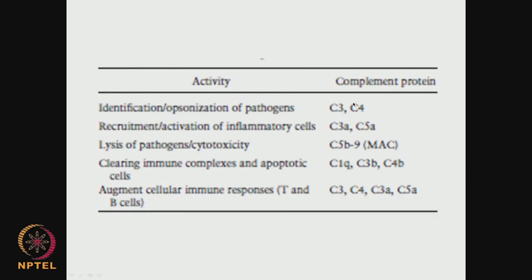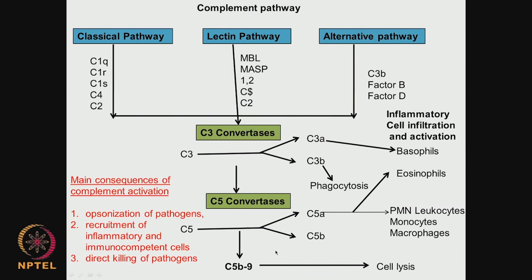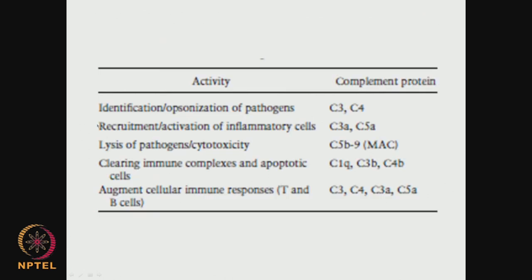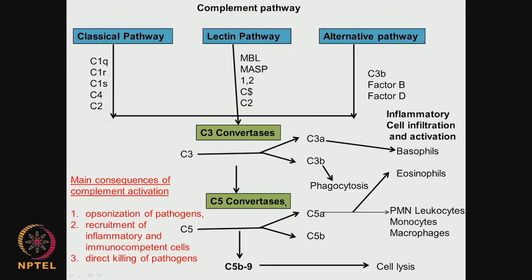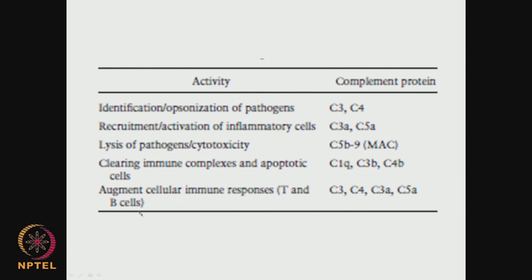There are many complement proteins: C3 and C4 — as I said there are 30 different plasma-bound or membrane-bound proteins which are complement. C3 and C4 are involved in identification, that is opsonization of pathogens. C3a and C5a are involved in recruitment and activation of inflammatory cells. C5b9 is involved in lysis of pathogens and cytotoxicity. So: C3 and C4 are involved in identifying pathogens; C3a and C5a are involved in recruitment of inflammatory cells; C5b9 is involved in cell lysis. Clearing immune complexes in apoptotic cells is done by C1q, and C1q also helps augment cellular immune responses, bringing back the cellular response with the help of T and B cells.